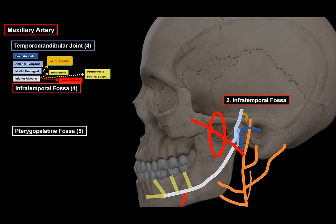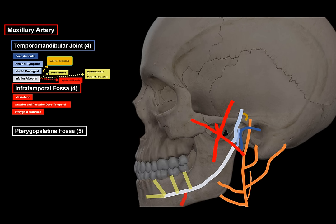In the infratemporal fossa, the maxillary artery passes between the lateral and medial pterygoid muscles — part of the muscles of mastication — and the branches here mostly supply those muscles. There is the masseteric artery for the masseter muscle, the anterior and posterior deep temporal arteries for the temporal muscle, the pterygoid branch for the pterygoid muscle, and the buccal artery for the buccinator — the muscle that aids in smiling and pushing food while chewing.